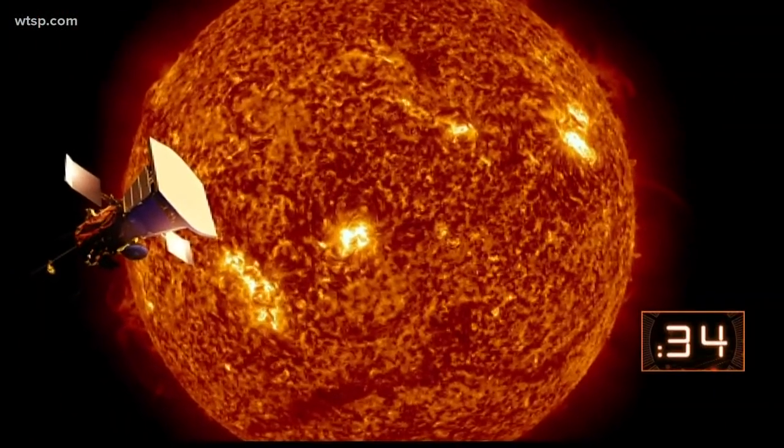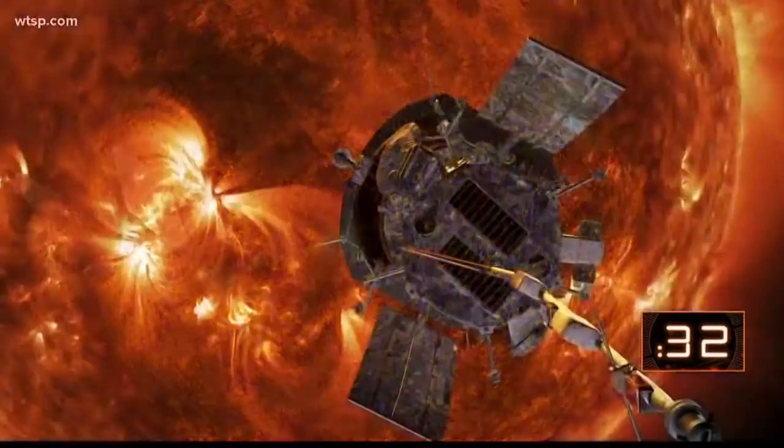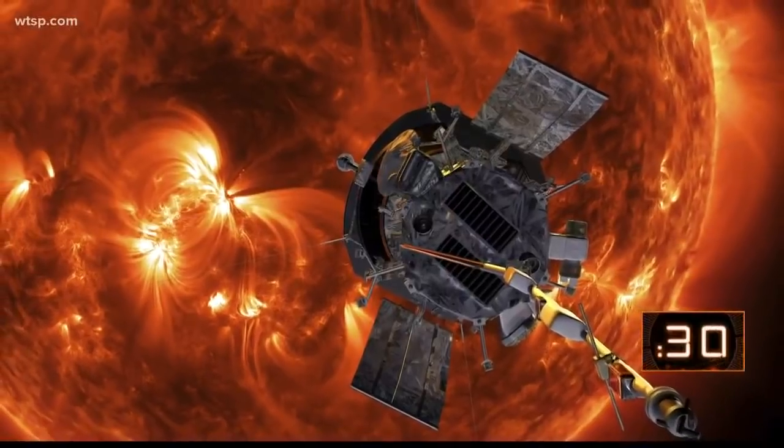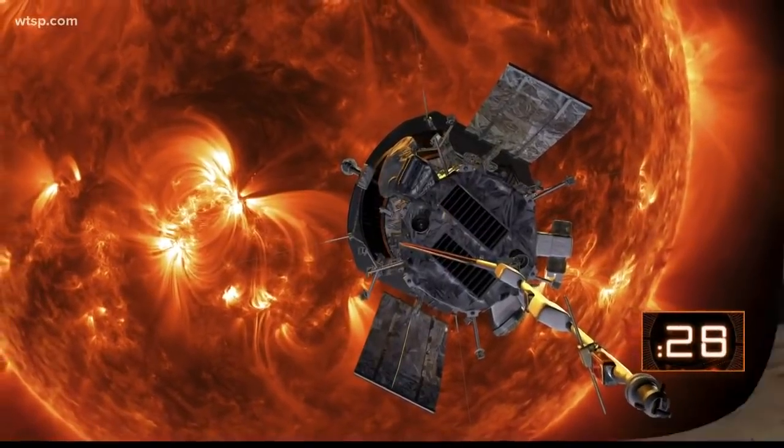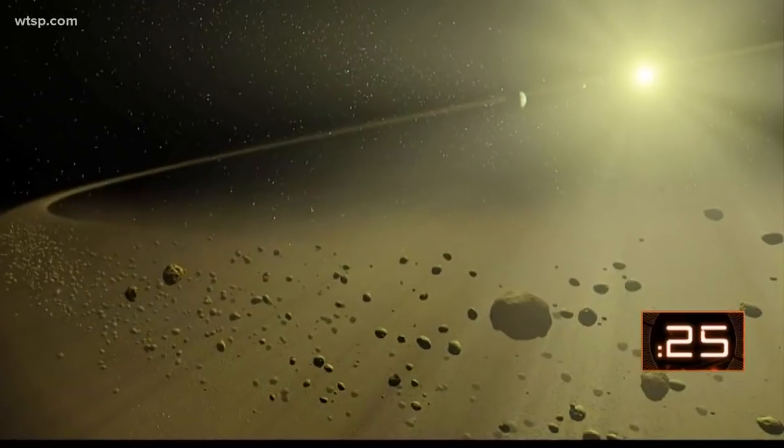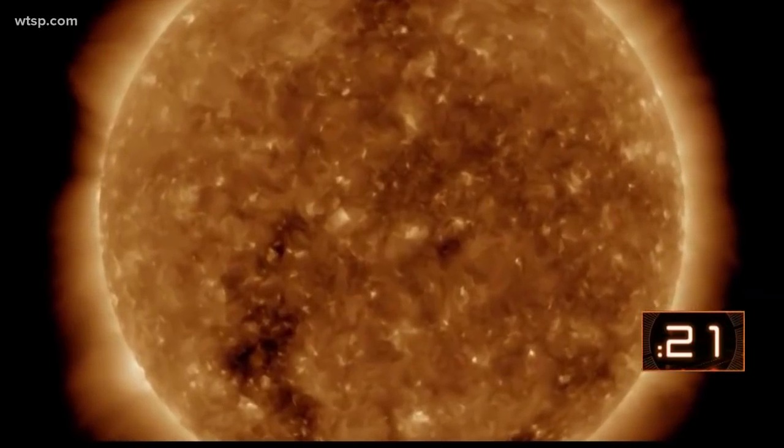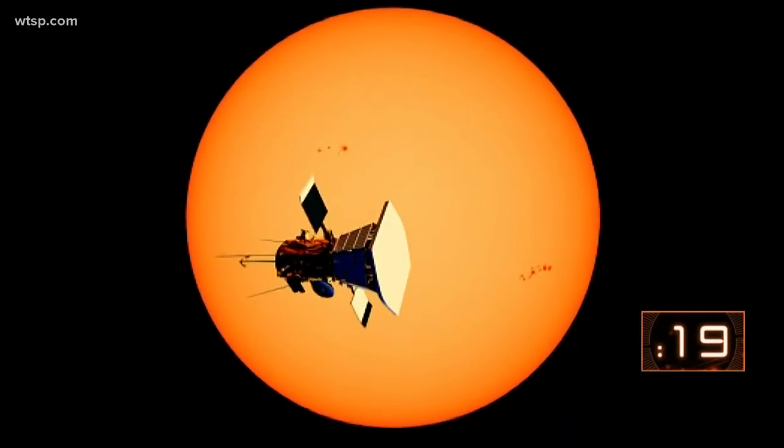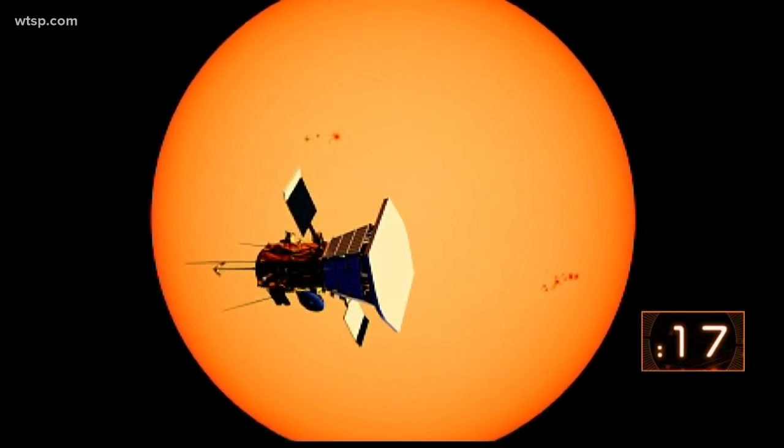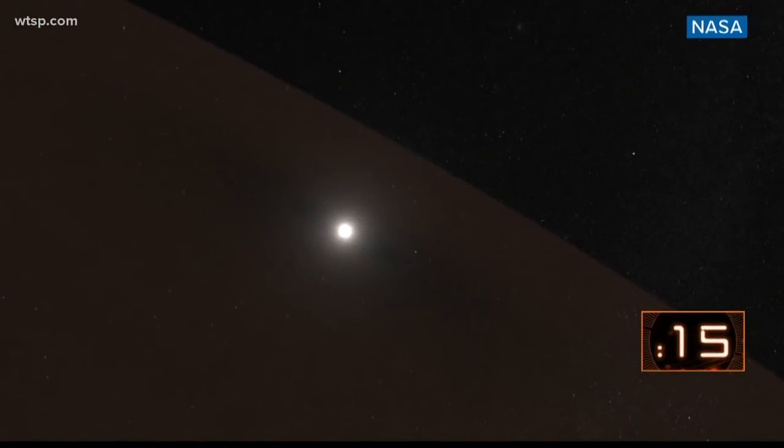Something else very interesting, Parker was able to detect the beginning of the elusive dust-free zone around the sun. There's dust all over our solar system, leftover bits from collisions between celestial bodies, except for a region around the sun. For the first time ever, Parker captured images that showed the dust field beginning to thin at 7 million miles away from the sun.